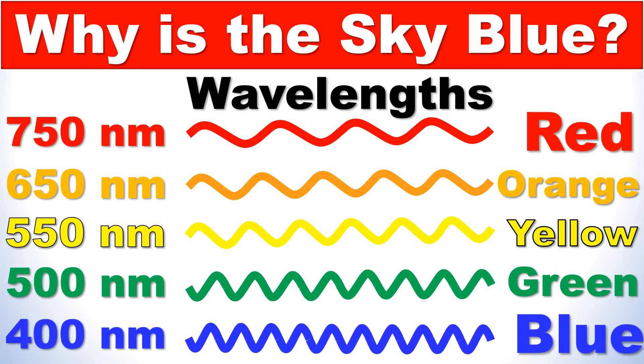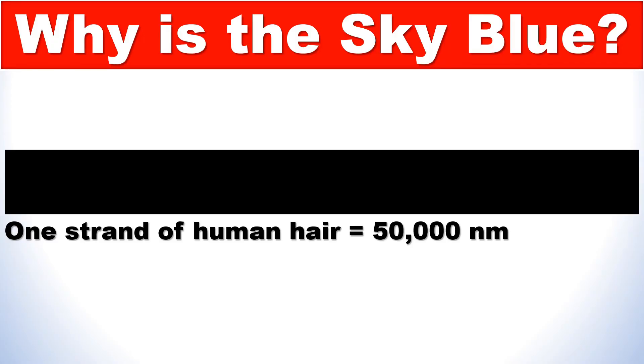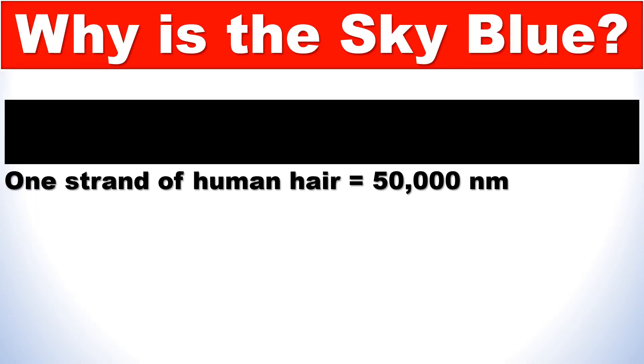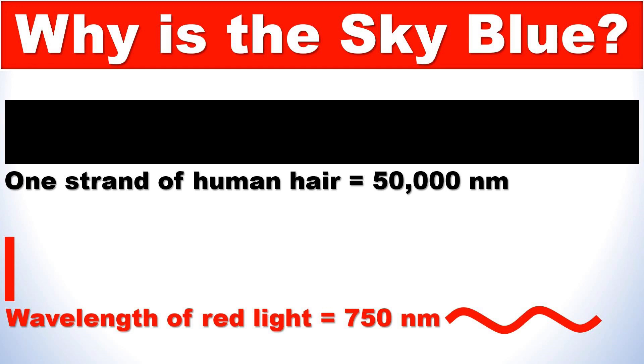A blue wave on the other hand has the shortest wavelength and is actually about 400 nanometers long. And in comparison, one single strand of human hair is actually about 50,000 nanometers thick. So if this is the width of one single strand of hair, this is the width of the color red.